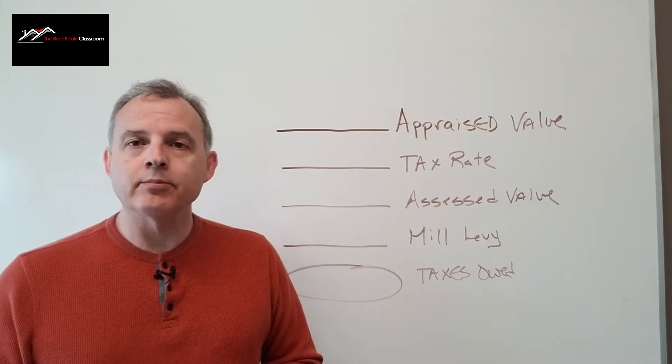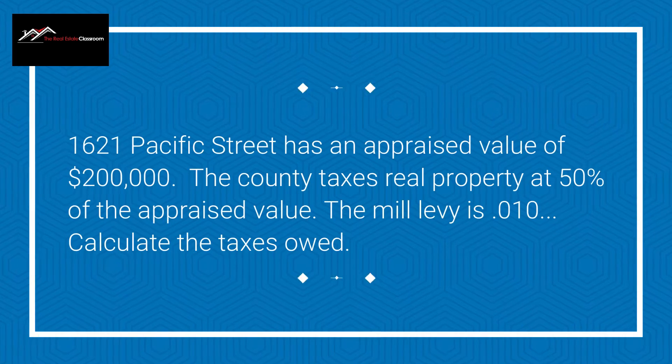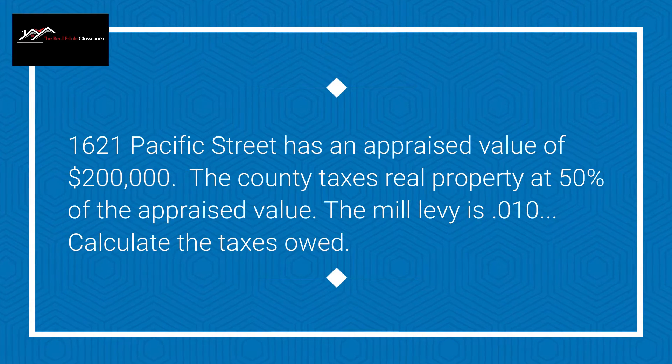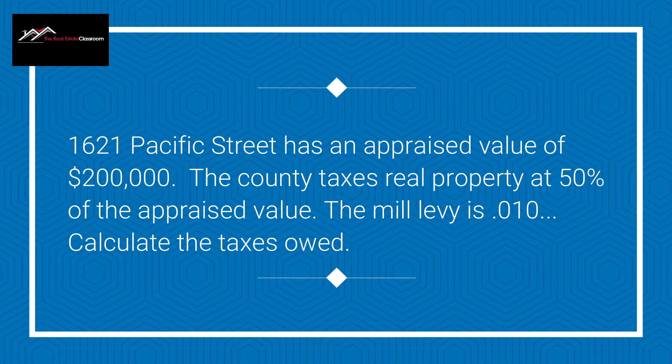Let's take a look at a sample problem. 1621 Pacific Street has an appraised value of $200,000. The county taxes real property at 50% of the appraised value. The mill levy is 0.010. Calculate the taxes owed.